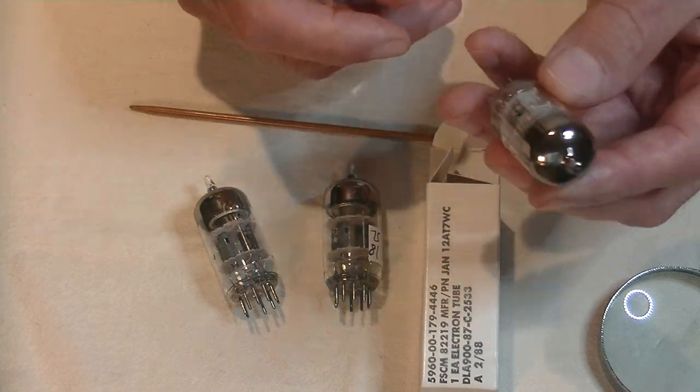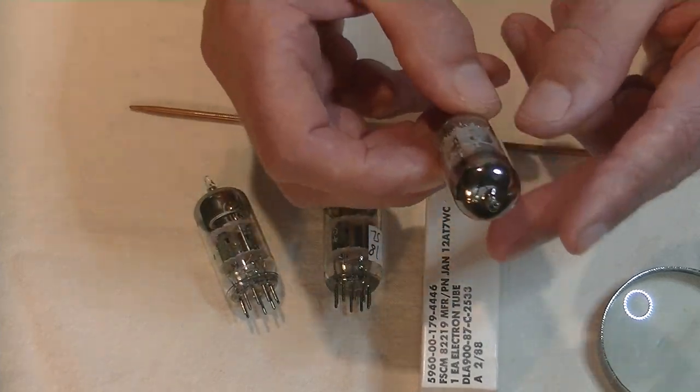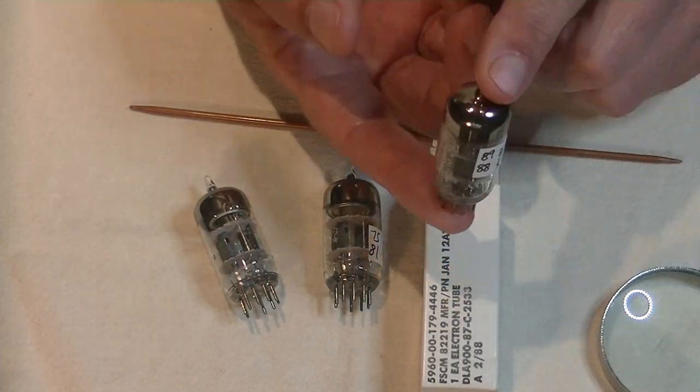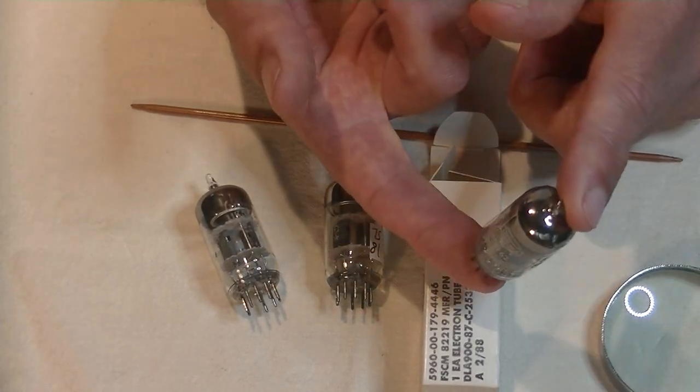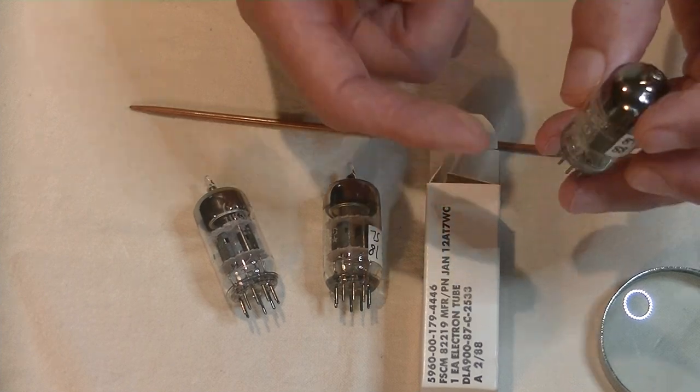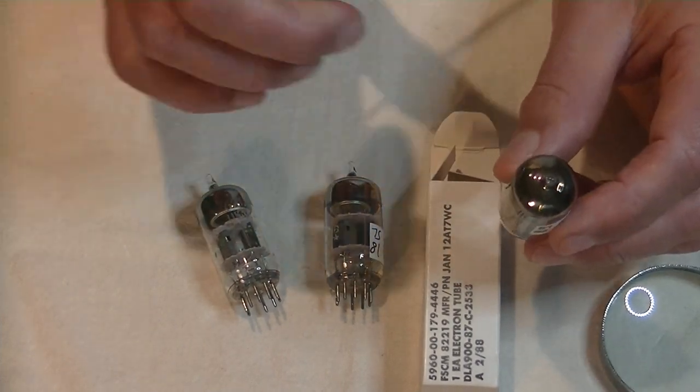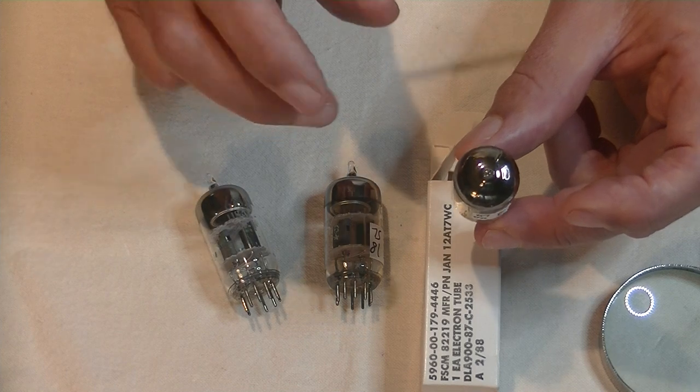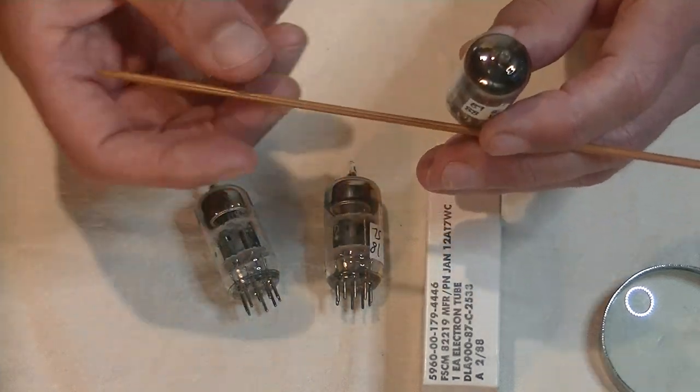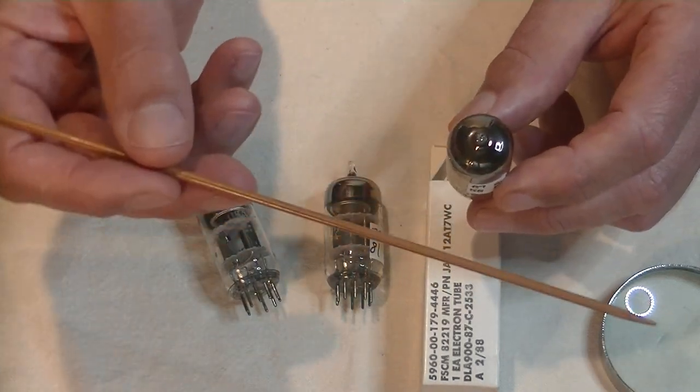So, how would we test the tube for microphonics? What I do is I put it in circuit, so in my, in this case, in my phono or my control preamp. So, I warm it up, I set the volume to a normal listening volume.